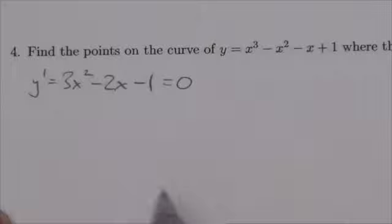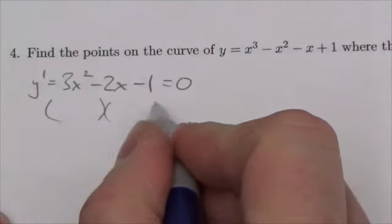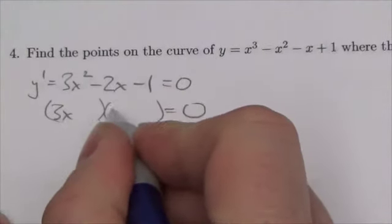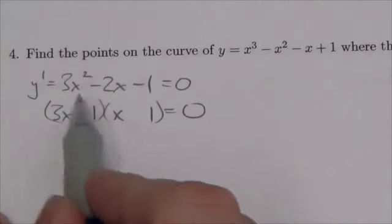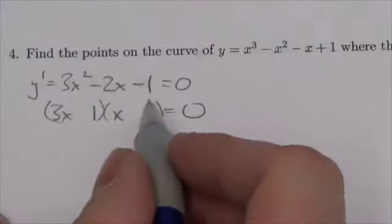This is just a quadratic that needs to be solved here, so I'm going to try to factor this. So 3x and x, this has got to be 1 and 1. Is it possible for me to get a negative 2 in there as a linear term?